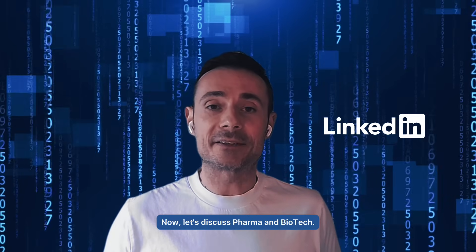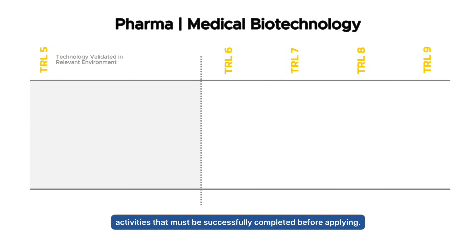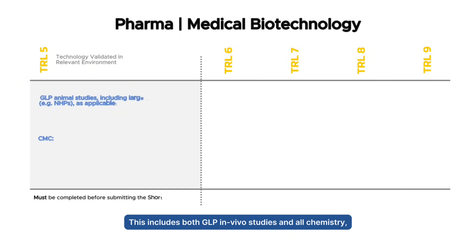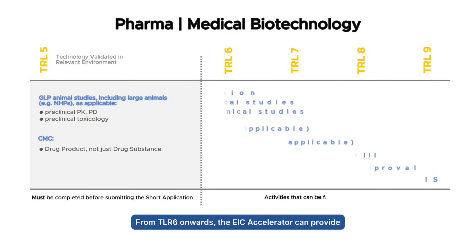Now let's discuss pharma and biotech. Let's begin with the TRL 5 activities that must be successfully completed before applying. At this stage, all preclinical work should be finished. This includes both GLP in vivo studies and all chemistry, manufacturing, and controls activities. In simple terms, you should be ready to submit an IND or CTA application. From TRL 6 onwards, the EIC accelerator can provide funding for any step in your clinical development pathway.